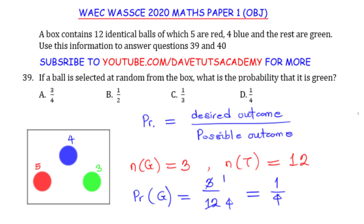Looking at the options, we can see option D, that is 1 over 4.